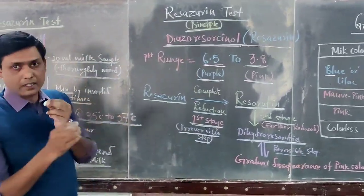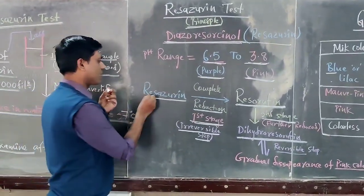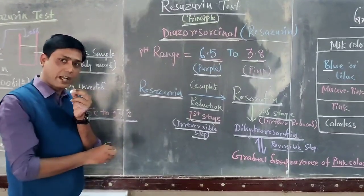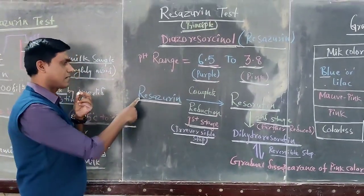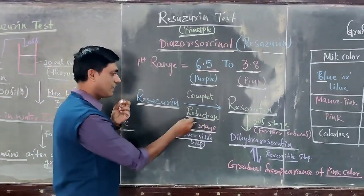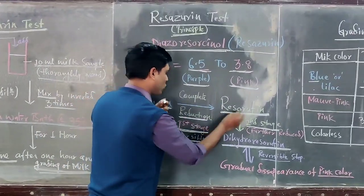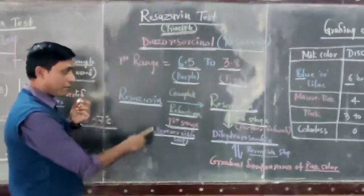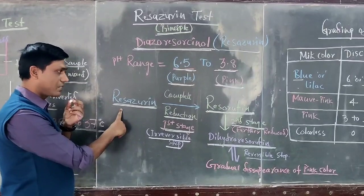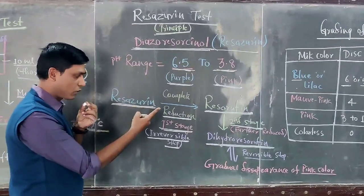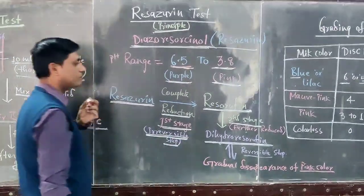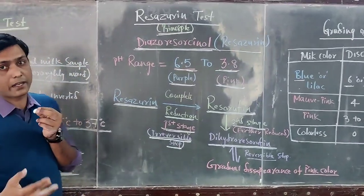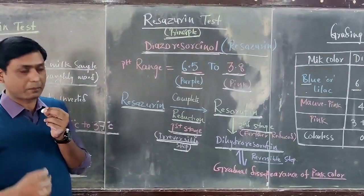What is the principle of the resazurin test? When we add resazurin dye to the milk sample, the resazurin is completely reduced to resazurin white. This first stage is irreversible and occurs due to the presence of a higher number of microorganisms in the milk sample.